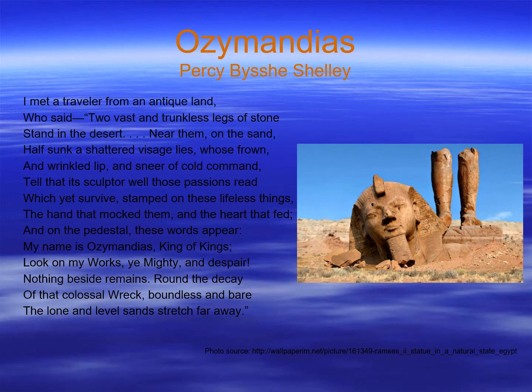"I met a traveler from an antique land who said, two vast and trunkless legs of stone stand in the desert. Near them, on the sand, half sunk, a shattered visage lies, whose frown and wrinkled lip and sneer of cold command tell that its sculptor well those passions read, which yet survive, stamped on these lifeless things, a hand that mocked them and the heart that fed. And on the pedestal these words appear: My name is Ozymandias, King of Kings. Look on my works, ye Mighty, and despair. Nothing beside remains. Round the decay of that colossal wreck, boundless and bare, the lone and level sands stretch far away."